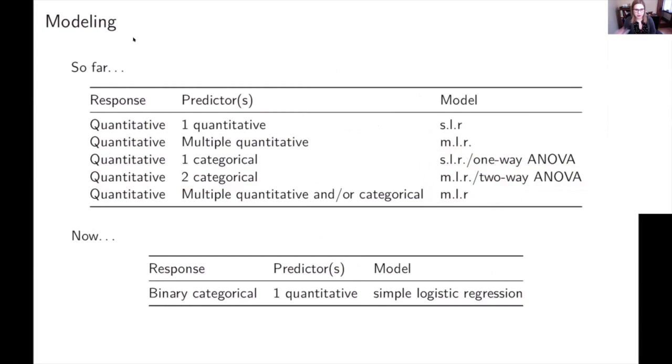And then the thing that is different now that we're in unit C, which is about logistic regression, is we're going to change the kind of response variable that we can have. So before, it was always a quantitative response variable, and the thing that was different was all the different special cases for special types of predictors, and now we're changing the response variable.